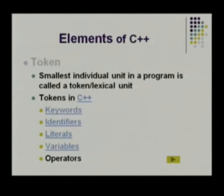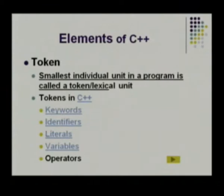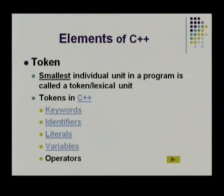The word token — what does it mean? It is the smallest individual unit in a program, which is also called a lexical unit. Token refers to the basic elements of the C++ language which cannot be further broken down into anything simpler.